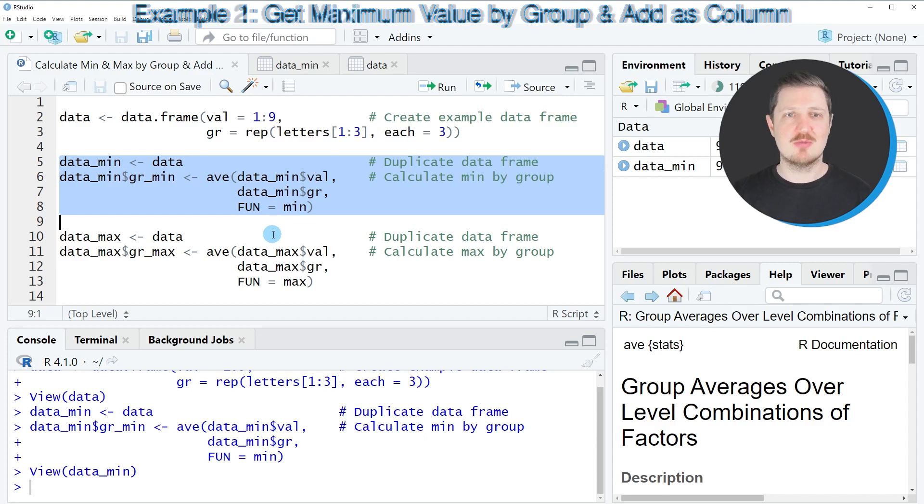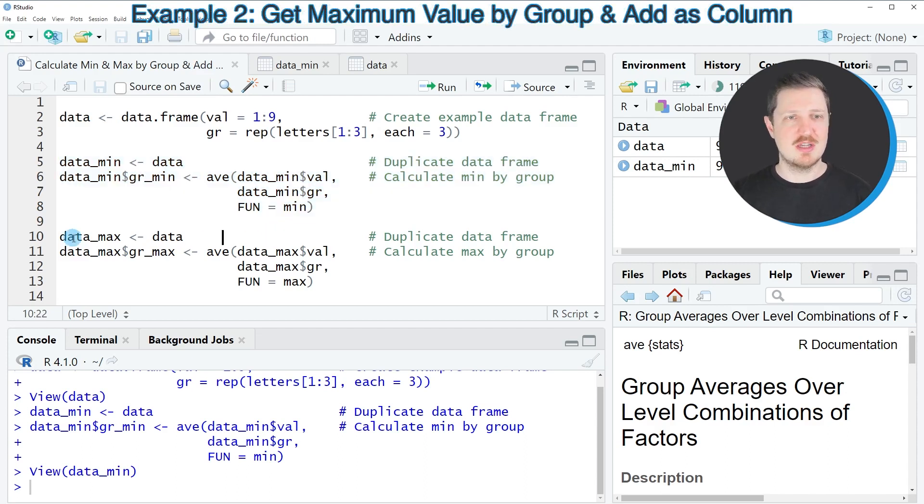However similar to that we can also calculate the maximum value by group as you can see in lines 10 to 13. And basically the only difference compared to lines 5 to 8 of the code is that this time I'm specifying the function to be equal to the max function.